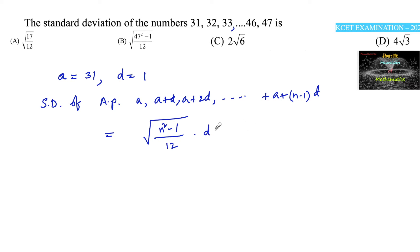where n is the number of terms and d is the common difference. So here in the given sequence, the first term a is equal to 31 and common difference d is equal to 1.